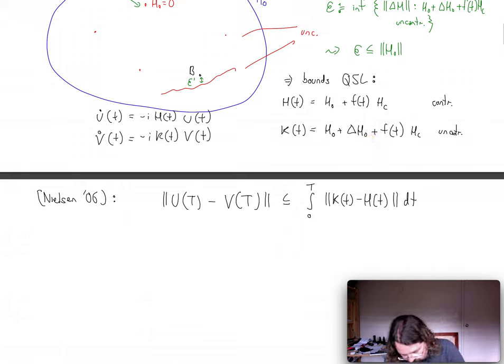So this is smaller or equal, or it's actually equal to t times delta H. And so if you choose the smallest one, this gives you t epsilon, if you take the distance to uncontrollability.